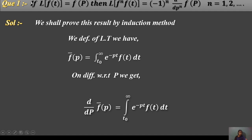Next, if L{f(t)} = F(p), then L{t^n f(t)} = (−1)^n · d^n/dp^n · F(p), for n = 1, 2, ...